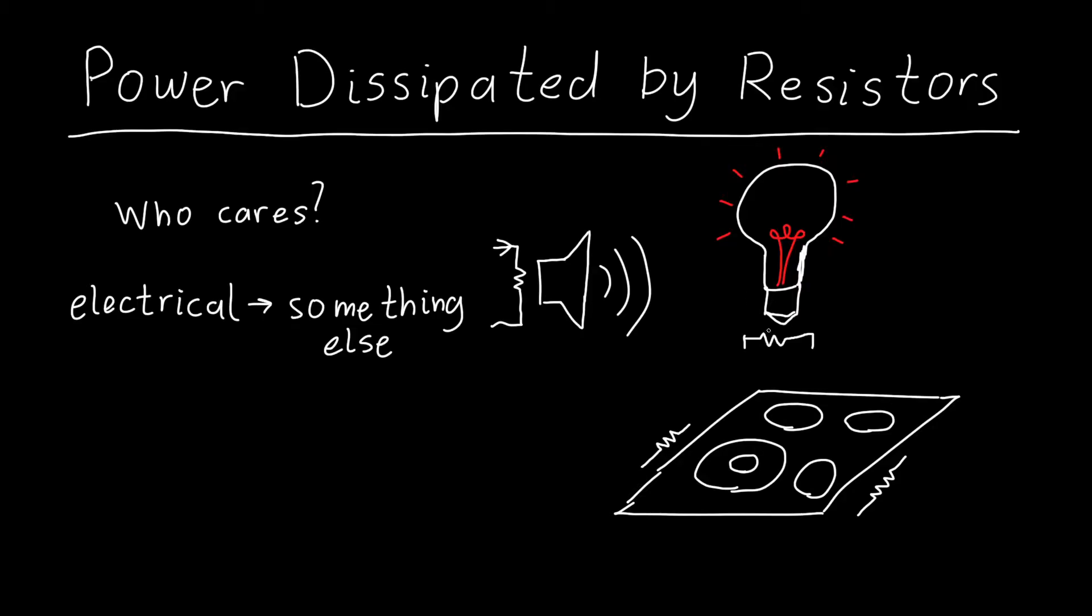A light bulb is a resistor. It takes electrical energy and converts it into visible light. A heater, or your stove, is a resistor. It takes electrical energy, if you have an electric stove, and converts it into heat. In all of these cases, what matters is the amount of power entering or leaving our system, because that relates to how loud something is going to be, or how bright it is, or how hot it gets.